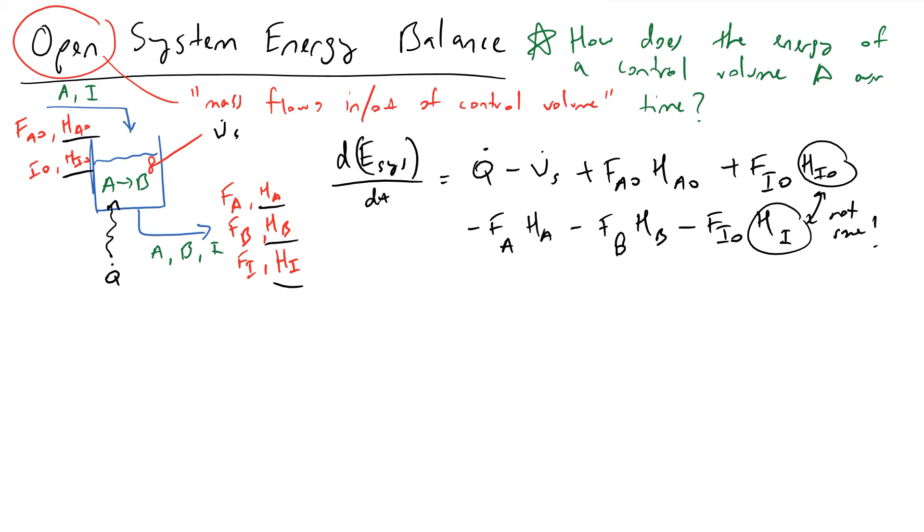Another point I want to make here is performing a dimensional analysis on this. The change in energy has units of joules and time has units generally of seconds, so we're looking at joules per second, and this we also refer to as watts. So the dimensions of your open system energy balance are going to be in terms of watts.